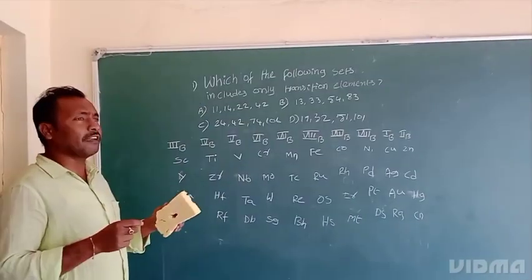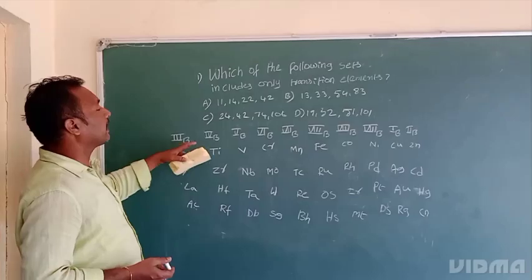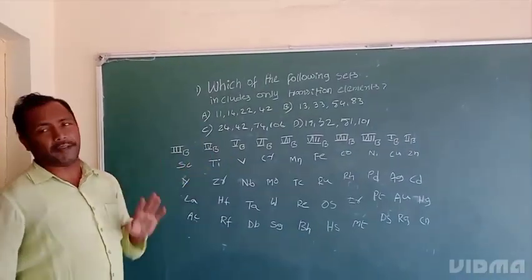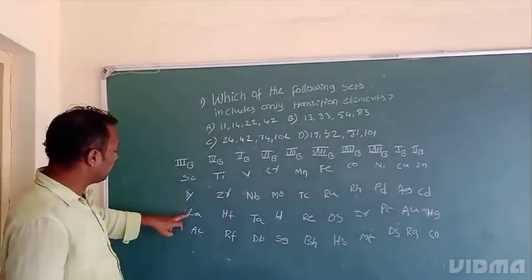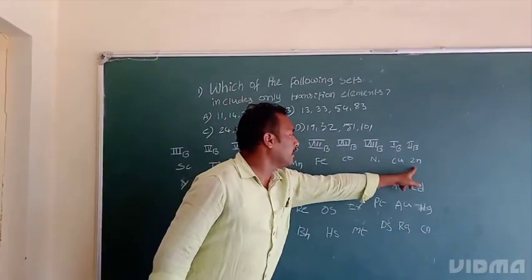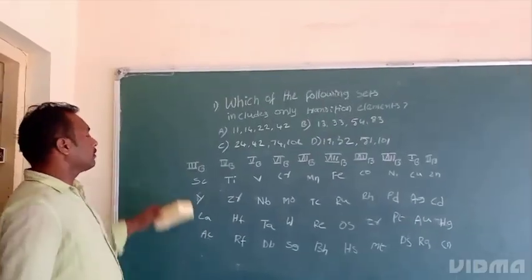So, transition elements, what are the transition elements? 3B to 2B. 3B elements: Scandium, Yttrium, Lanthanum, Actinium. And 2B elements: Zinc, Cadmium, Mercury and Copernicium.